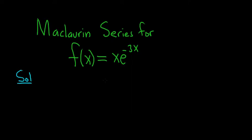We'll start by writing down the Maclaurin series for e^x. So the Maclaurin series for e^x is equal to the infinite sum as n goes from 0 to infinity of x^n over n factorial. Super useful formula, totally worth memorizing.